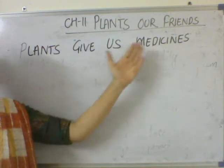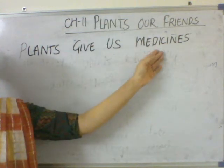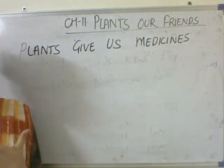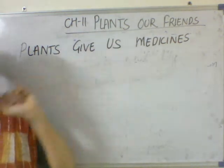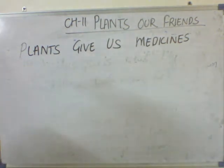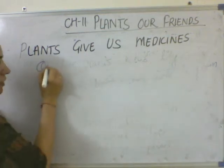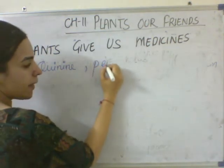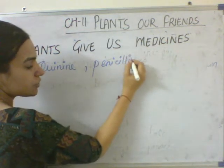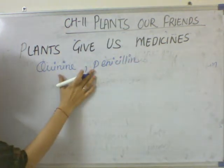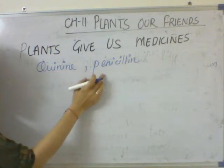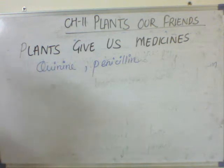Plants also give us medicines. Medicines are called 'davanya'. Jab aap bimar ho jate ho, do aap davanya lete hai. Like, jab aapko khansi ho jati hai, your mother gives you tulsi leaves that we get from the plant. The names of these medicines are quinine and penicillin. Jab hameh bukhar ho jata hai, tab hameh quinine and penicillin lete hai. This medicine we get from the plant.